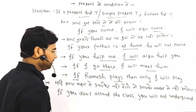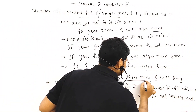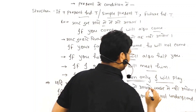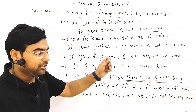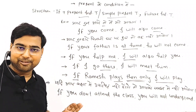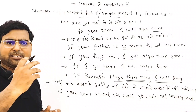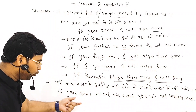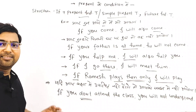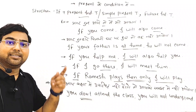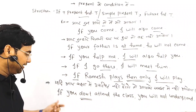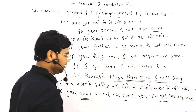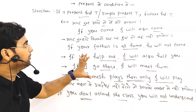If Ramiz plays, then only I will play. Note: here 'then only' is used for emphasis. If you do not attend the class, you will not understand. Remember — with 'if,' we can use 'not' directly. We do not replace 'not' with 'until' or 'unless' in these structures. This concept represents the present condition pattern.